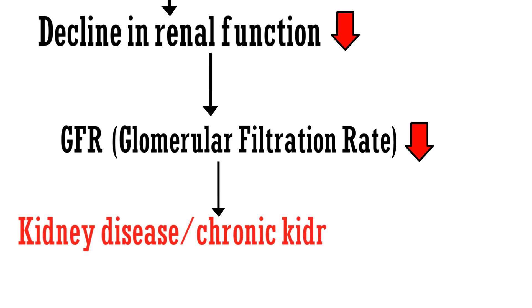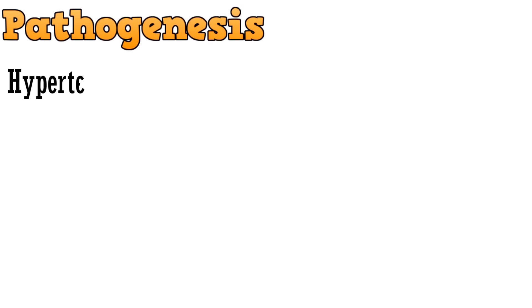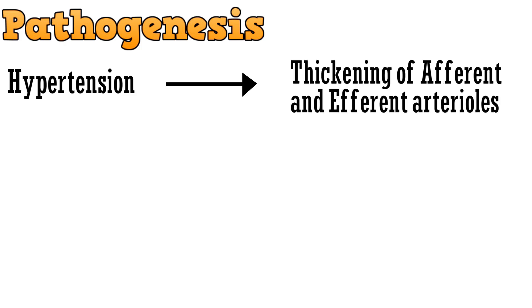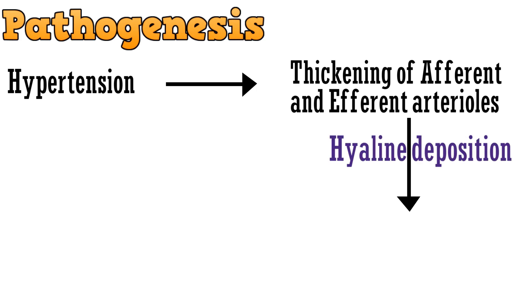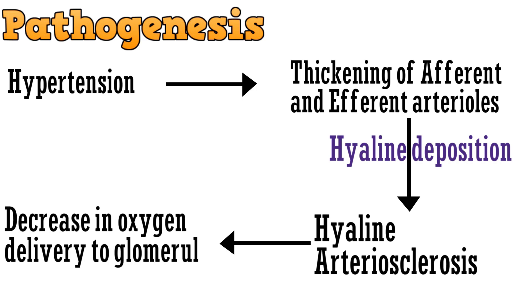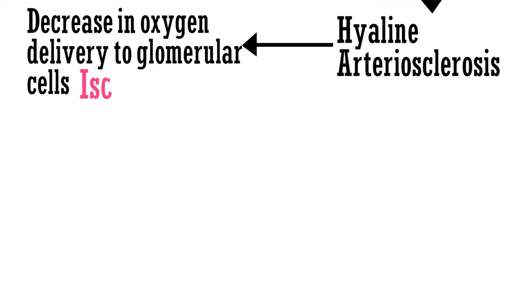Now let's discuss the pathogenesis of how hypertension causes kidney disease. In order to understand it better, we will use the flowchart method. Hypertension results in thickening of the afferent and efferent arterioles as a compensatory mechanism. This thickening is basically hyaline deposition, also known as hyaline arteriosclerosis. Due to thickening of the arterioles, less blood will pass through, which will result in a decrease in the oxygen supplied to the glomerular cells, also called ischemia.